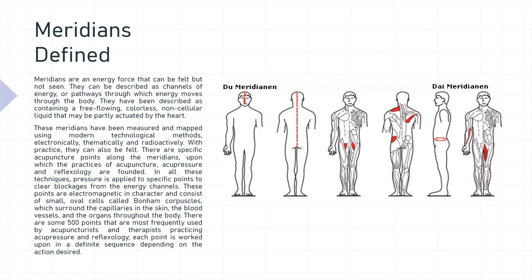What are the meridians? The meridians are an energy force that can be felt but not seen. They can be described as channels of energy or pathways through which energy moves through the body. They have been described as containing a free-flowing, colorless, non-cellular liquid that may be partly actuated by the heart. These meridians have been measured and mapped using modern technological methods — electronically, thermally, and radioactively.